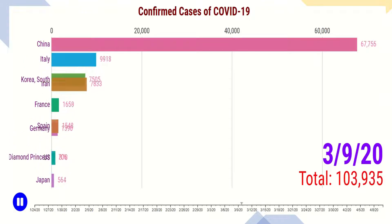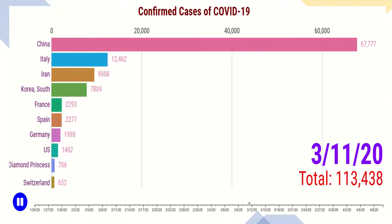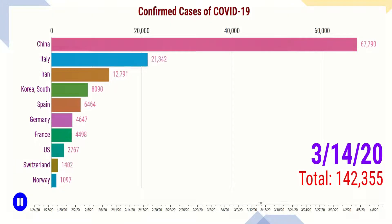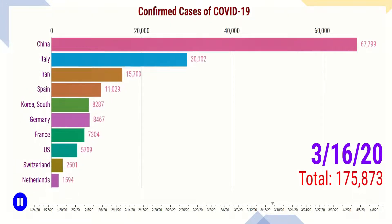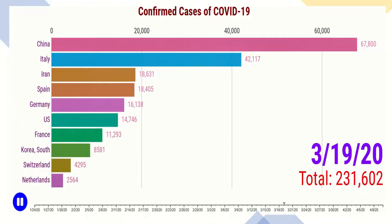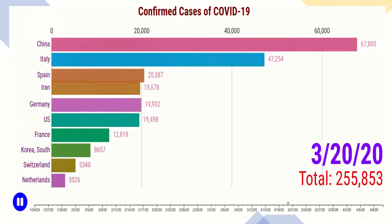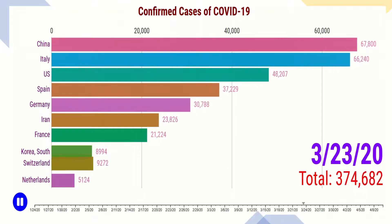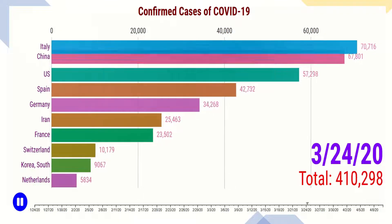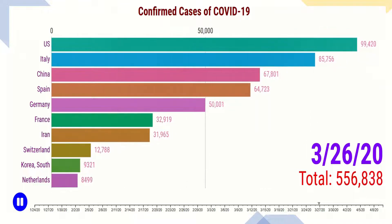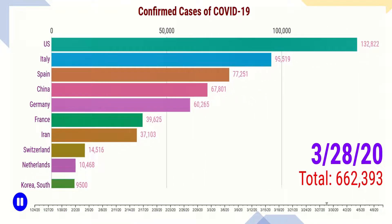By this time, China succeeded in controlling new infections through strict lockdowns. By the middle of March, Italy reported an exponential rise in infections. The last peak of March marked Italy as having the highest number of infections, with the US quickly catching up and crossing Italy as the country with the highest number of infections.